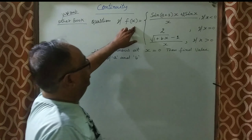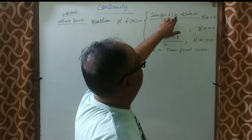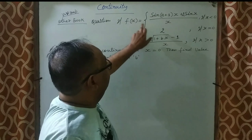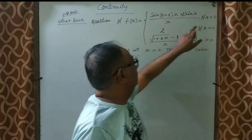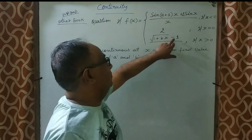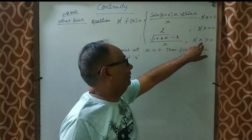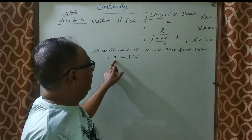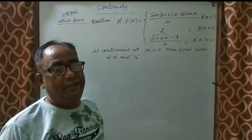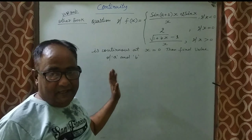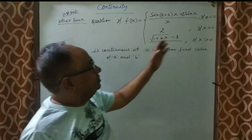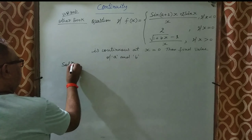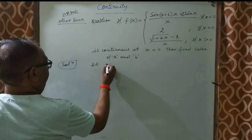Next question from another book: if f(x) = [sin(a+1)x + 2sinx] / x when x < 0; f(x) = 2 when x = 0; f(x) = (√(1 + bx) − 1) / x when x > 0 — and the function is continuous — then find the values of a and b.